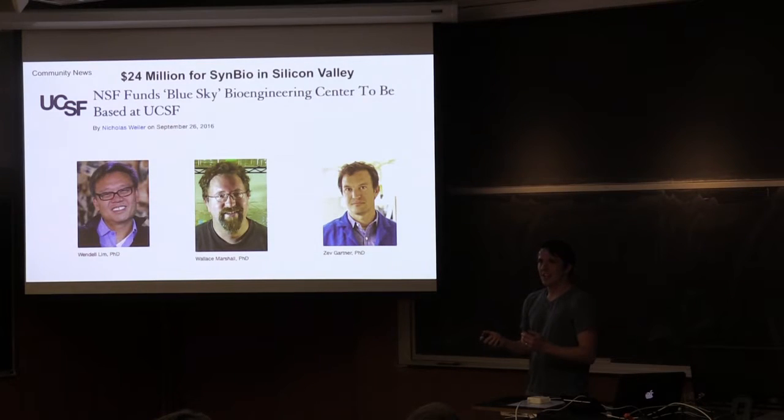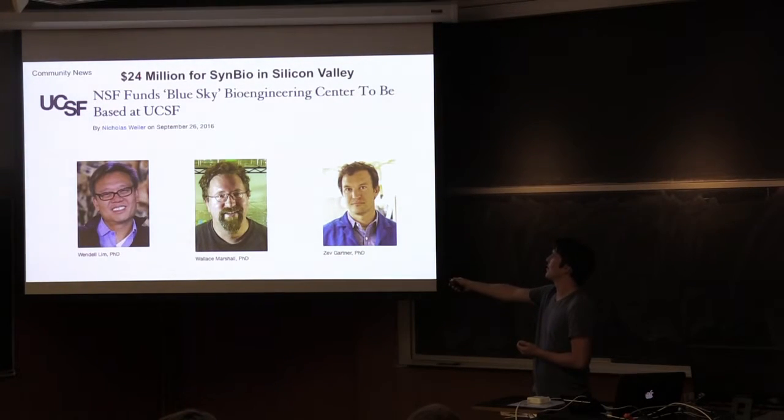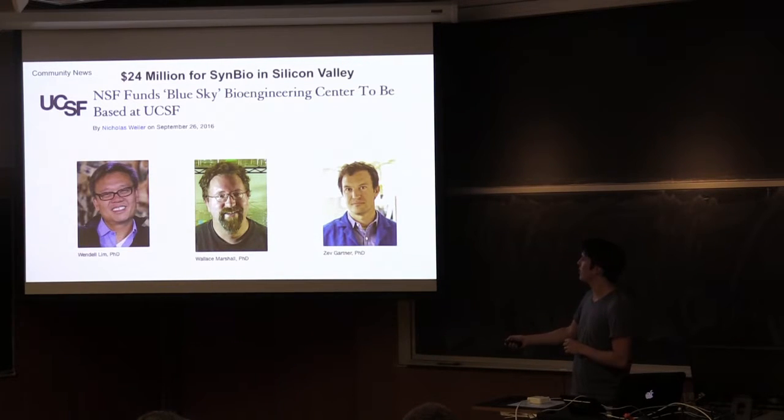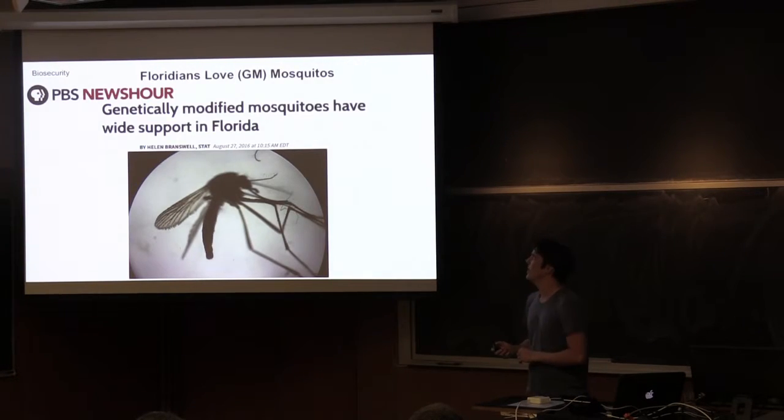Silicon Valley got even more money for synthetic biology. So the NSF gave the University of California, San Francisco, a $24 million grant to build a blue sky bioengineering center directed by Wendell Lim, Wallace Marshall, and Zeb Gartner. They're doing a bunch of things trying to make cells behave more like computers and assemble rationally and do things that we would like them to do.